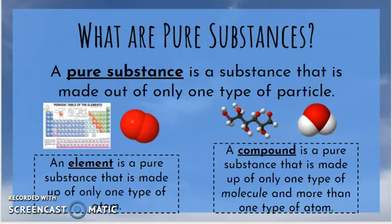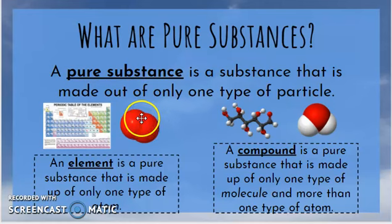Those atoms and molecules make up what we call pure substances. A pure substance is something made out of one type of particle — and that particle could be an atom, a molecule, or both. If it's a substance made out of only one type of atom, we call that an element. Examples include oxygen, hydrogen, helium, neon, and gold — all elements made of one specific type of atom. They could come as an individual atom or as a molecule with two or more atoms combined, but they're all the same type.